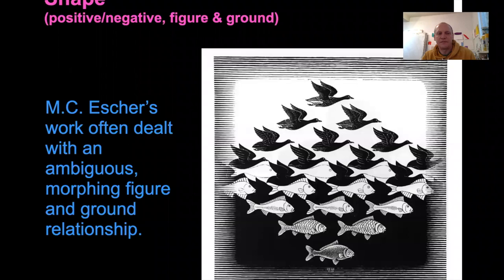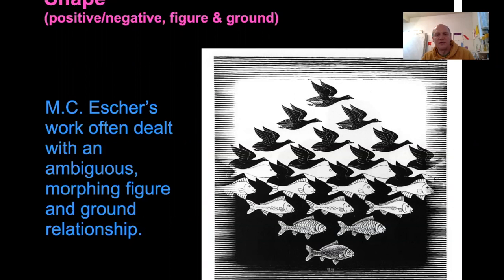This amorphous figure-ground relationship — up at the top, the white space is the background, but down below the white space is positive shape. The fish on the bottom are white and they're the figures, whereas up top the birds are black and they're also figures. So it's flipping back and forth what is positive and what is negative.